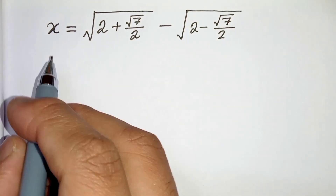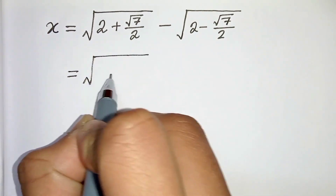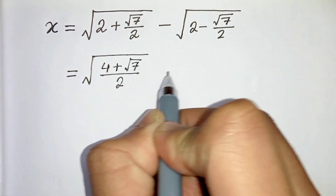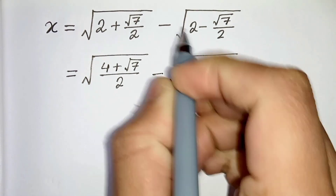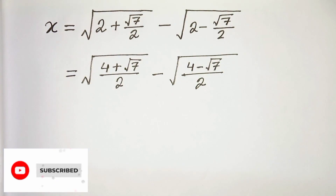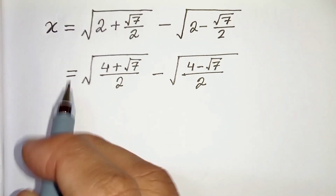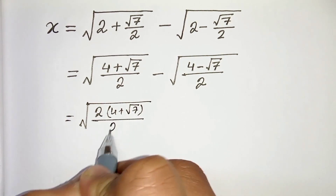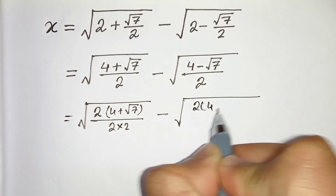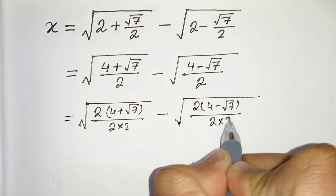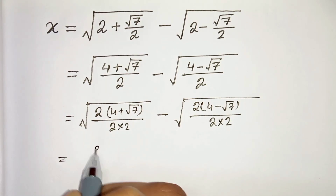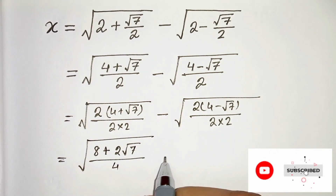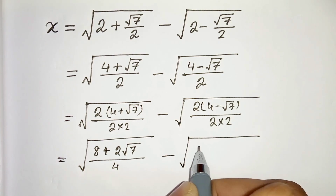Let's start. First of all, let's take LCM. In the denominator we have 2; in the numerator we will get 2 times 2 is 4 plus root 7. And here in the denominator we have 2 and 2 times 2 is 4 minus root 7. Now let's multiply by 2 in the numerator as well as in the denominator, so we will get 2 times (4 plus root 7) over 2 times 2, minus root of 2 times (4 minus root 7) over 2 times 2. So 2 times 4 is 8 plus root 7 over 4, and 2 times 4 is 8 minus root 7 over 4.